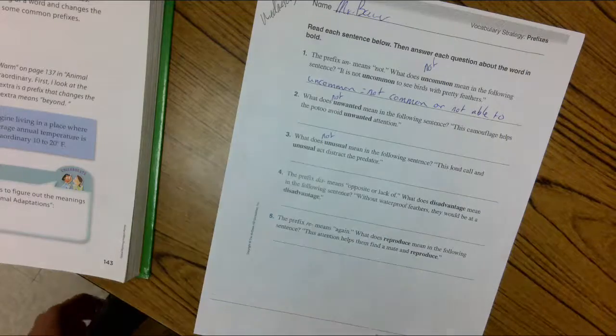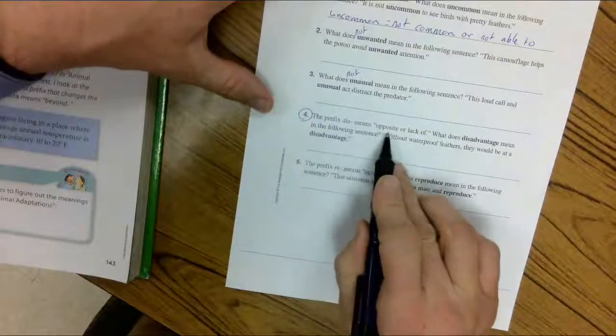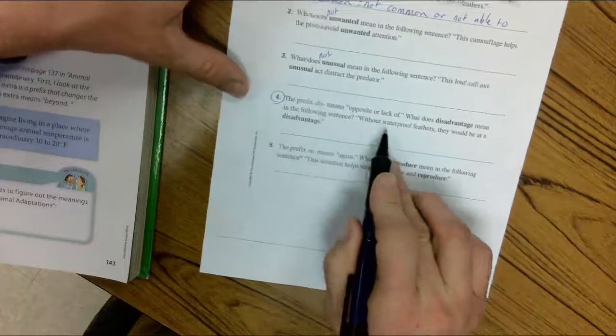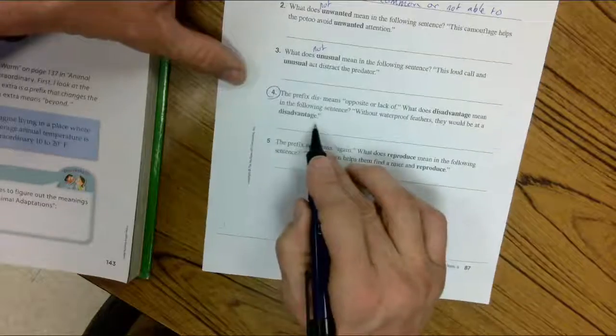Yeah, I know, a little strange. Look at number four. Let's do one with dis. The prefix dis means the opposite or lack of. What does disadvantage mean in the following sentence? Without waterproof feathers, they would be at a disadvantage.